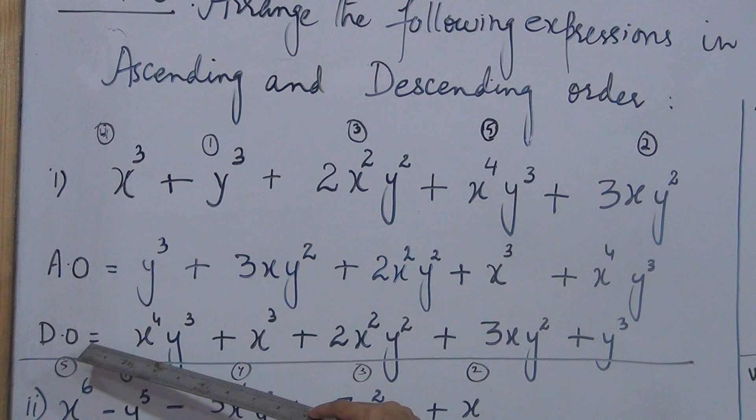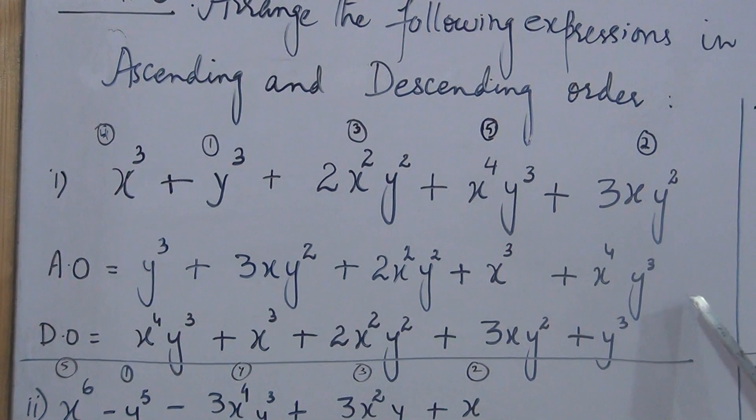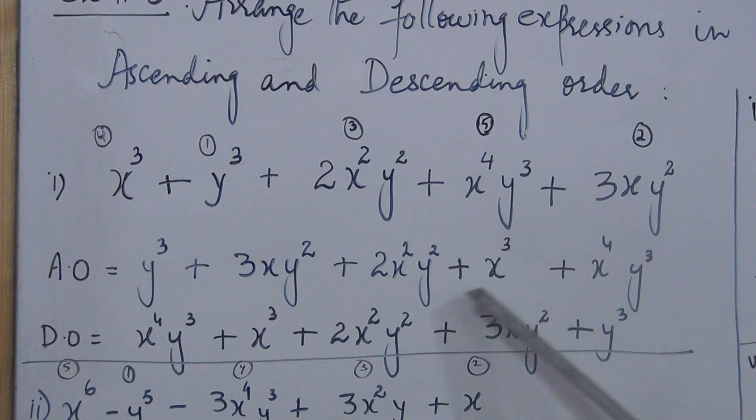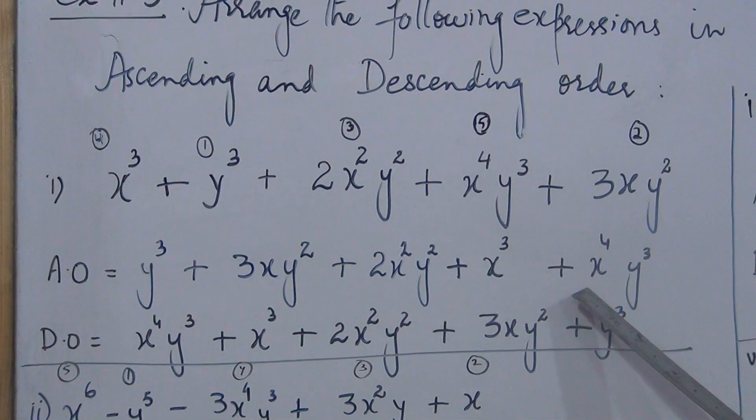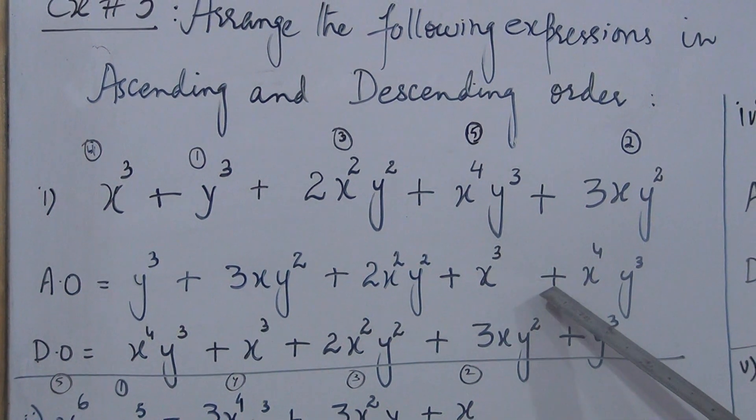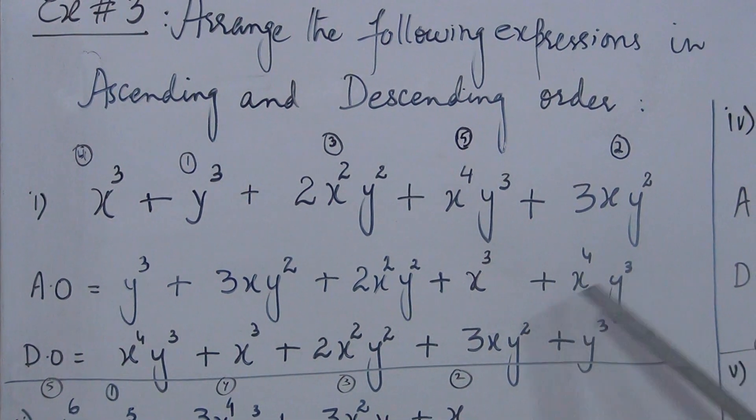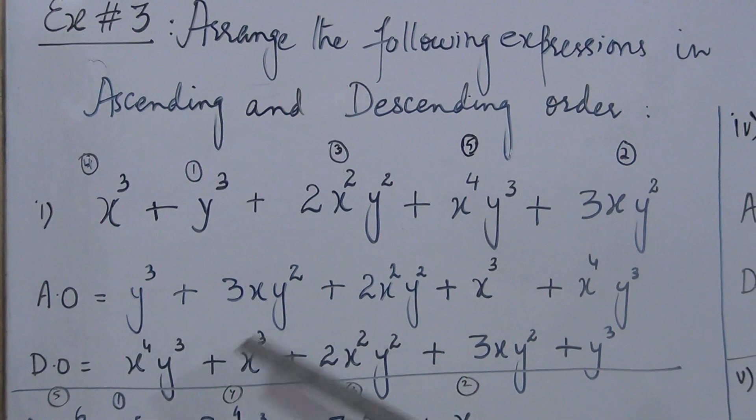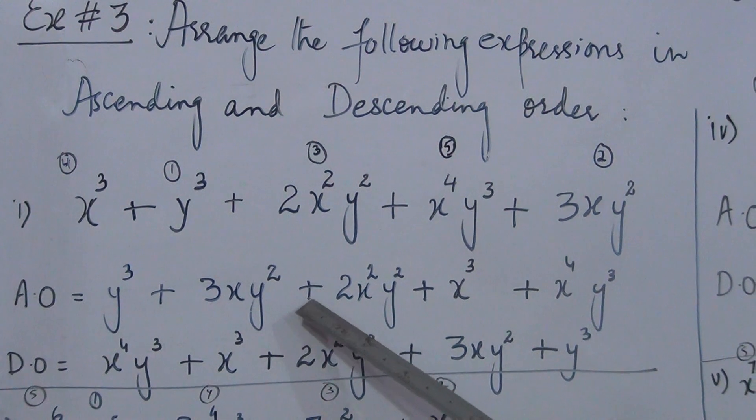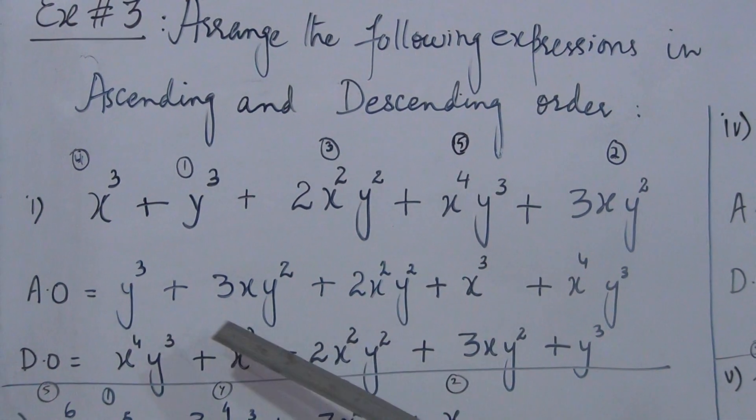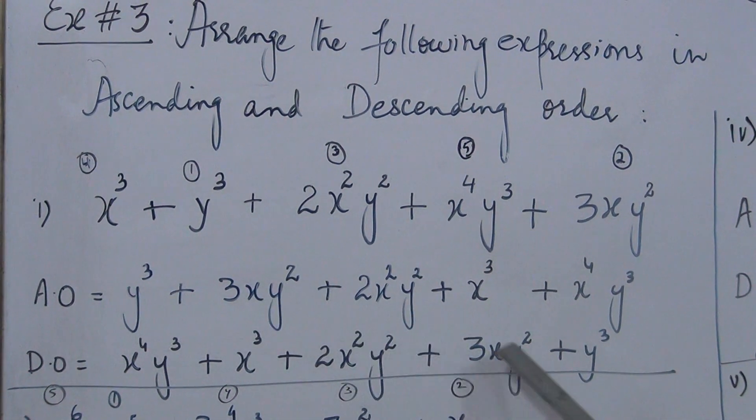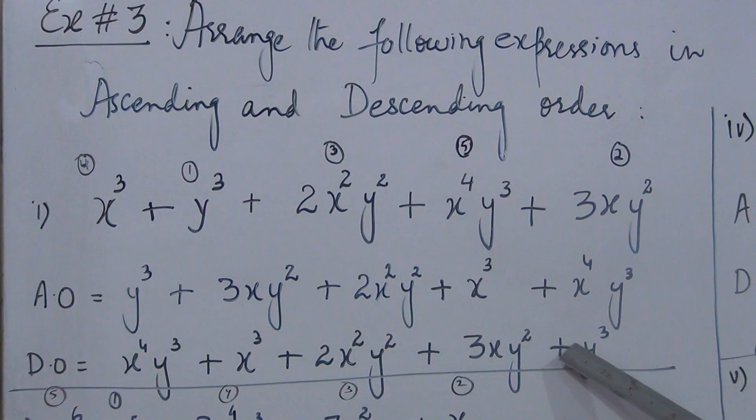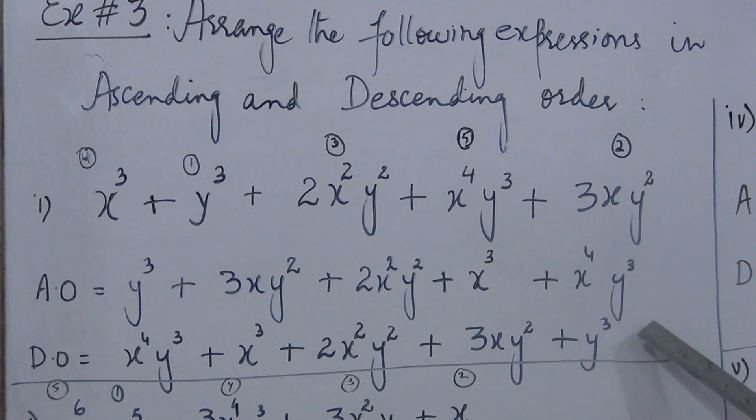Descending order, as I told you before, in reverse order we can change it to descending order. This same expression we arranged, write it in reverse order. X raise to power four y cube, plus x cube, plus two x square y square, plus three x y square. The plus we skipped earlier, now we have to write here, plus y cube.